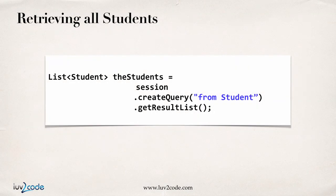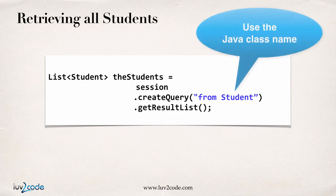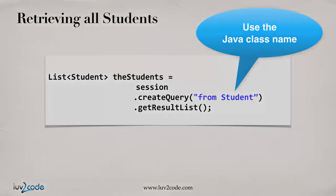Here's a very basic example — this is almost like doing a select star from a table. You can create a query to retrieve all students by calling session.createQuery, then say 'from student', and then call .list(). So 'from student' means give me a list of all student objects stored in the database. HQL is very concise — you simply say 'from student' and it gives you a list of student objects pre-populated with the data.